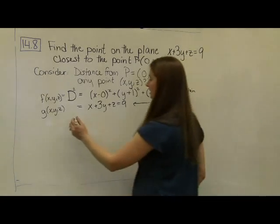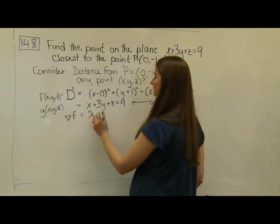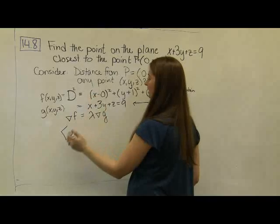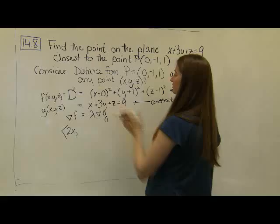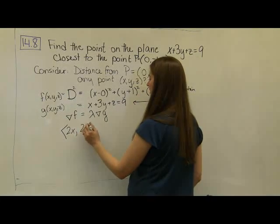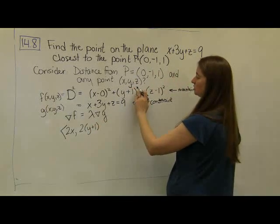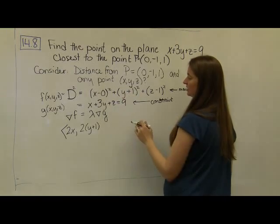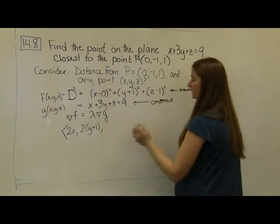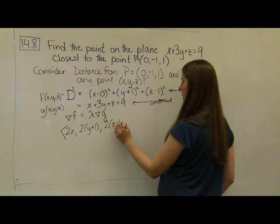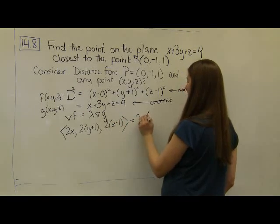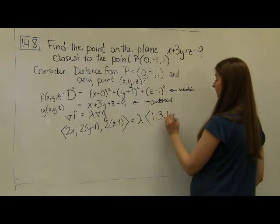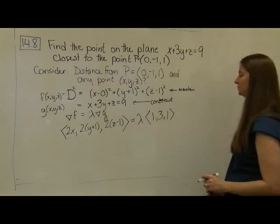The method of Lagrange multipliers: take the gradient of f and set it equal to some constant lambda times the gradient of g. The gradient of f — taking the partial derivative of each component — gives: partial with respect to x is 2x, partial with respect to y is 2(y plus 1) using chain rule, and the partial with respect to z is 2(z minus 1). That equals lambda times the gradient of g, which is actually exactly the normal vector of this plane.